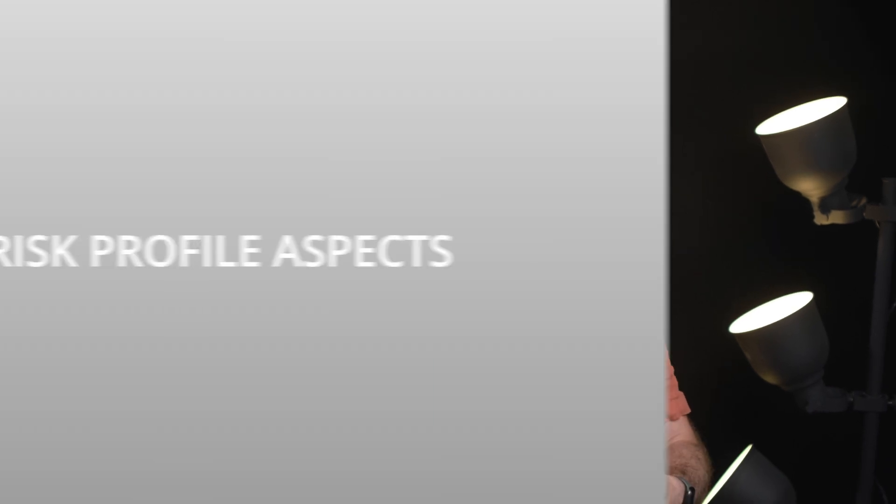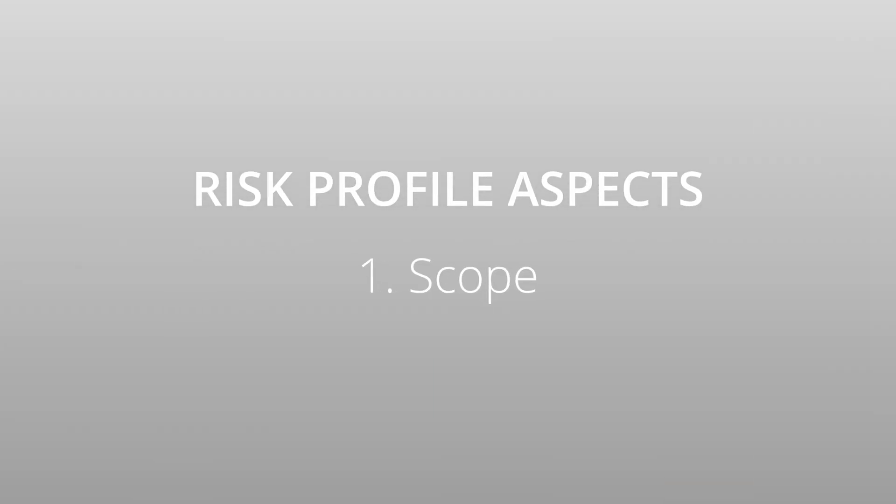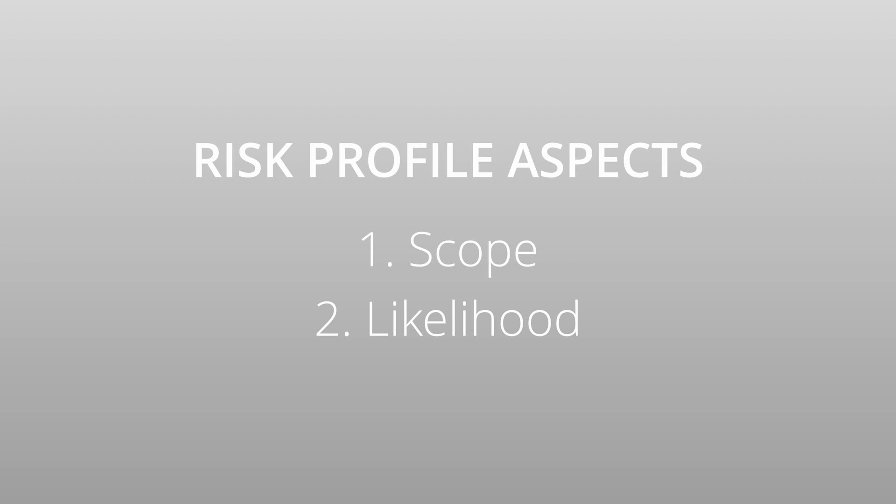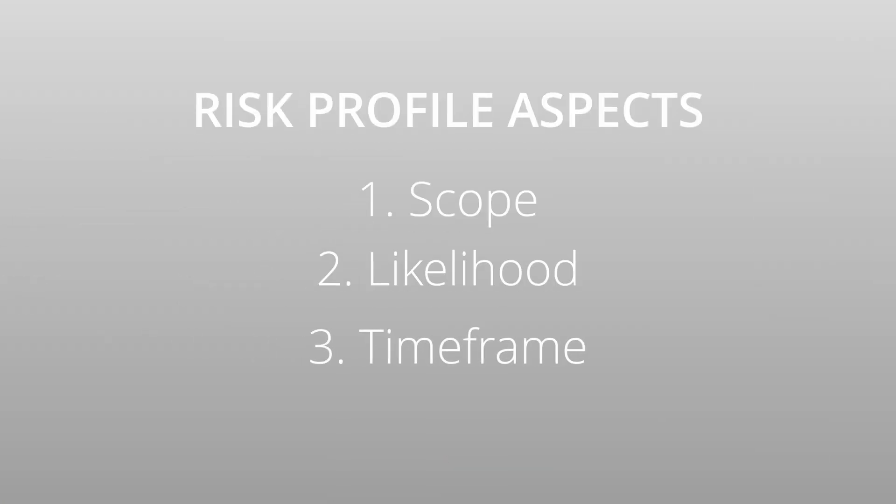What I've done to create this strategy is define four risk profiles based on a varying combination of three things. First is scope — are we talking about a single file that might have gone missing, or complete destruction of your whole premises? Second is likelihood — how likely is this event to arise? If it's rare, you can potentially take a little longer to recover the data. Third is timeframe — how long ago did the event happen? In some scenarios, the event that lost your data might not have happened just now; it might be some time before you realize.